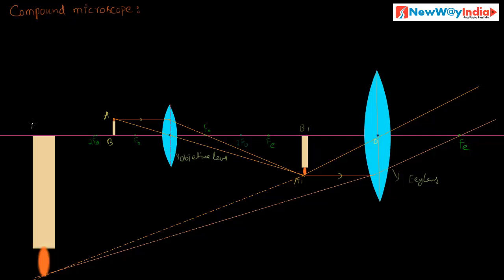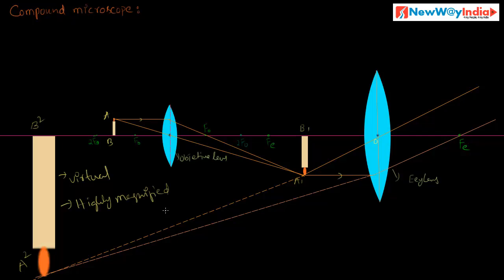The characteristics of the final image A2B2: the object for the eye lens and the final image are on the same side of the lens. The rays are diverging from this point, so it is a virtual image. Because of the eye lens, we get a virtual, highly enlarged, and highly magnified image. In this way we can see small objects in larger size.